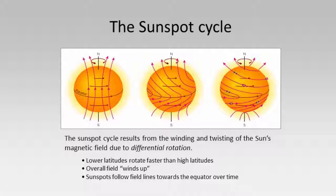A diagram illustrates how the lower latitudes rotate faster than the higher latitudes, causing the overall field to wind up. This shows how the Sun's non-solid nature has a great effect on how the magnetic field drives sunspots from mid-latitudes towards the equator. That gives us a first good introduction to the Sun as a star, which we'll use later to compare to other stars.